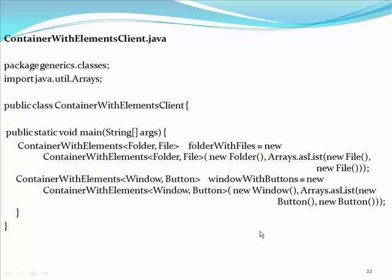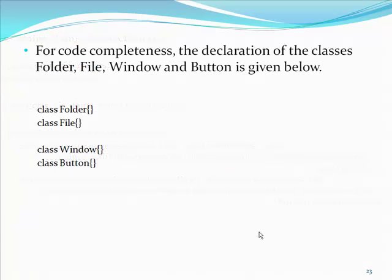The client program that makes use of the above class is given below. Note that the classes Folder, File, Window, and Button are from the generics classes package and have nothing to do with the genuine java.io classes. For code completeness, the declaration of the classes Folder, File, Window, and Button is given below: class Folder, class File, class Window, and class Button.